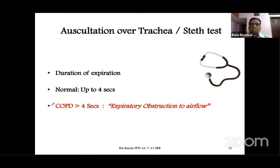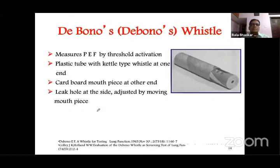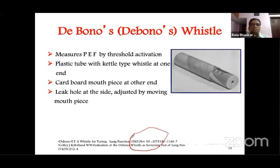There are links to dynamic lung functions: if somebody can blow at 9 inches, their MBC is almost normal at 150 L/min — a normal value in a male. If they cannot blow even at 3 inches, MBC is only 50 L/min. An important equation to remember: MBC = 35 × FEV1, and peak expiratory flow = 3 to 4 × MBC. Auscultation over the trachea — the steth test — involves placing the stethoscope over the trachea and counting the duration of expiration. Normally it is maximum 2 to 4 seconds; in COPD it goes beyond 4 seconds, representing expiratory obstruction. De Bono's whistle, a 1963 device, measures peak expiratory flow by threshold activation using a plastic tube with a critical whistle end and an adjustable leak hole.